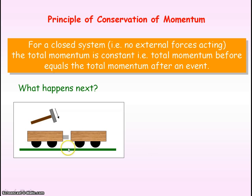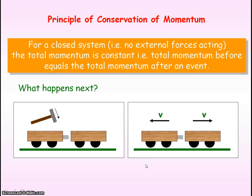If we first consider two trolleys that are initially stationary and the plunger of one of the trolleys is released, what will happen next to conserve momentum? The trolleys will move off with equal and opposite velocities. Because initially the trolleys were stationary, the initial momentum was zero. To conserve momentum, the final momentum must also be equal to zero.